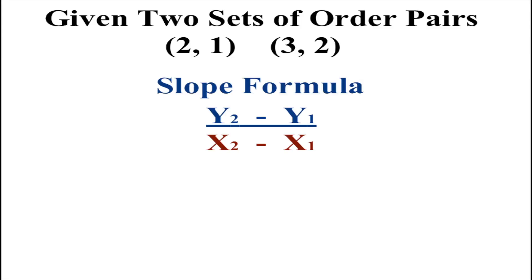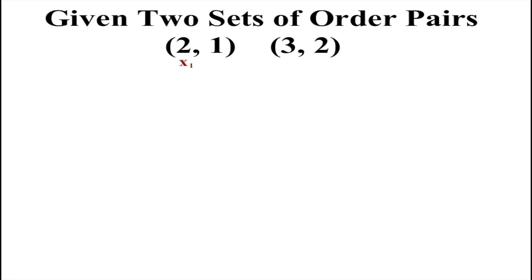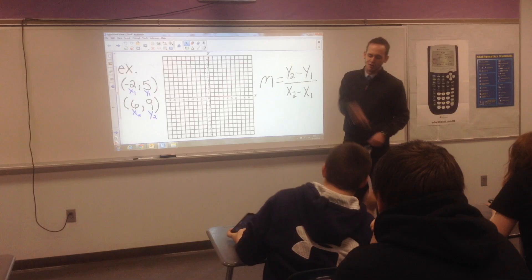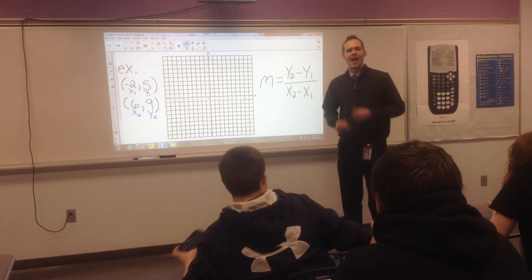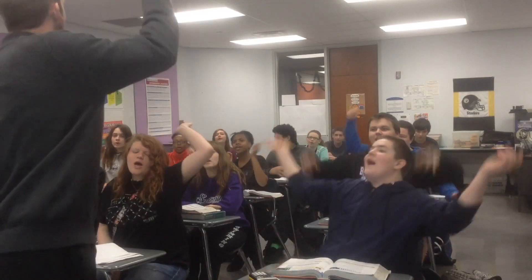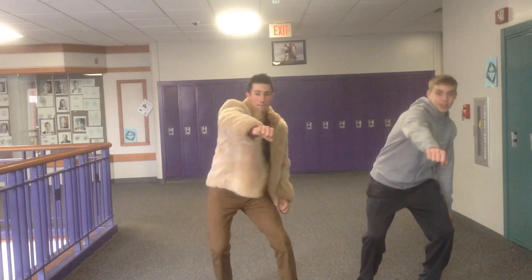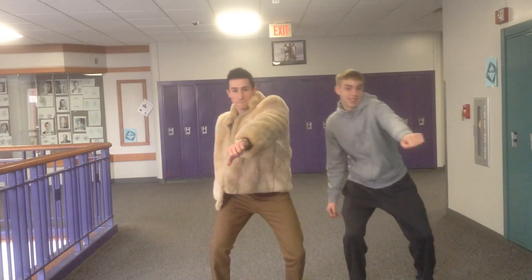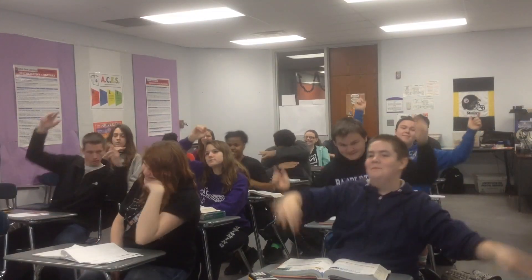Given two sets of ordered pairs, it's lit. Use the slope formula and we're gonna solve it. Always label the points so you don't mess up. Change in y over the change in x — I solved it. Ask the students if they're with us, if they won't quit. Got them with a half a feeling, about to go split.